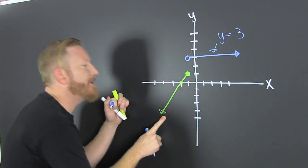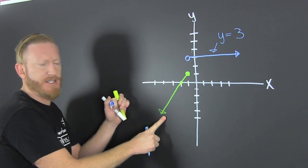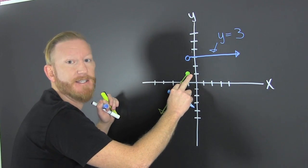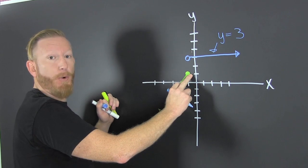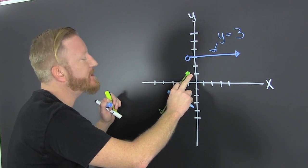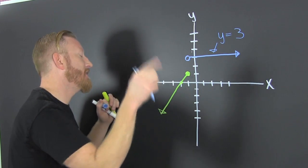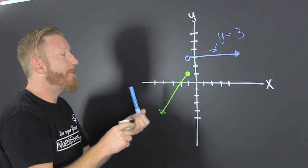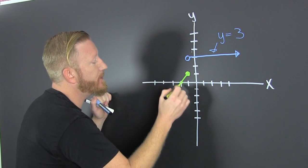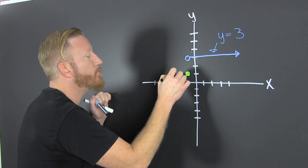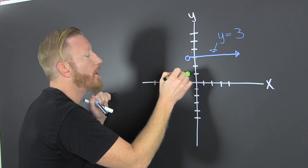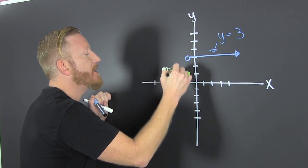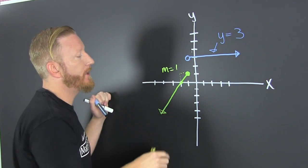Now we need to find the equation of this line. Many ways to do it — we can take two points, find the slope, and use point-slope. Three-step process in another video, or we can find slope from a graph. This is going to rise one, run one, so our slope is one — up one, over one.